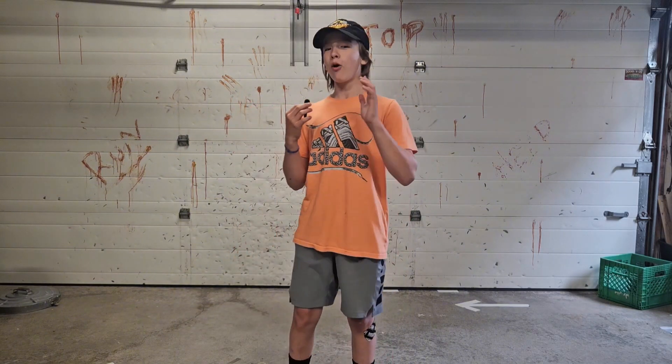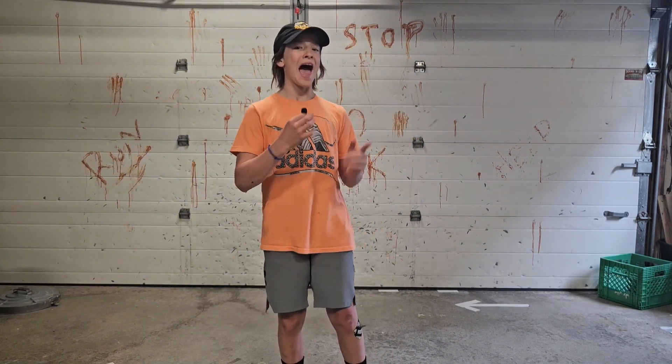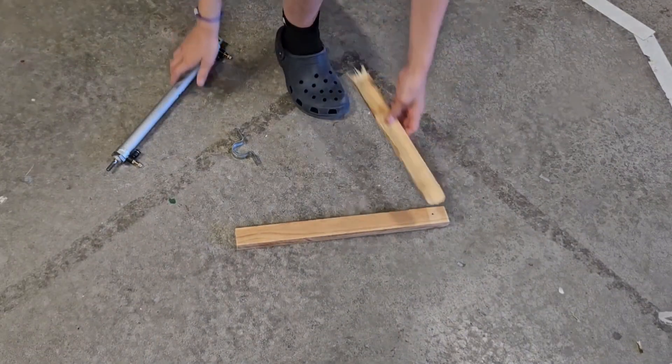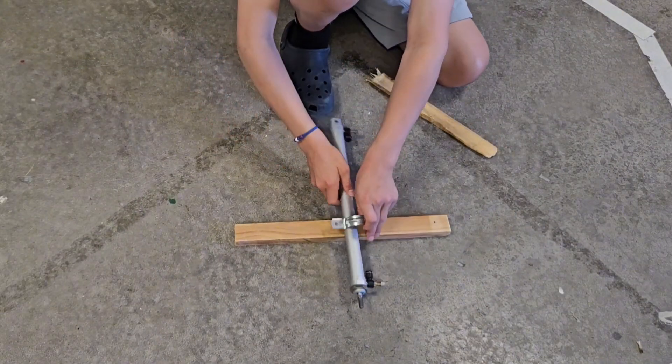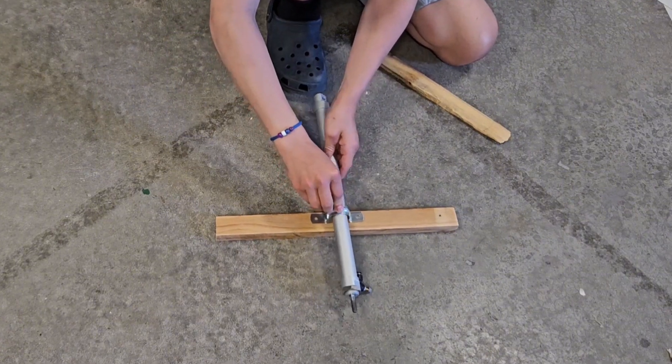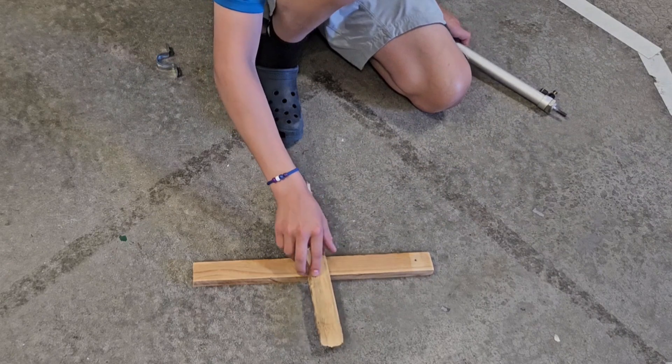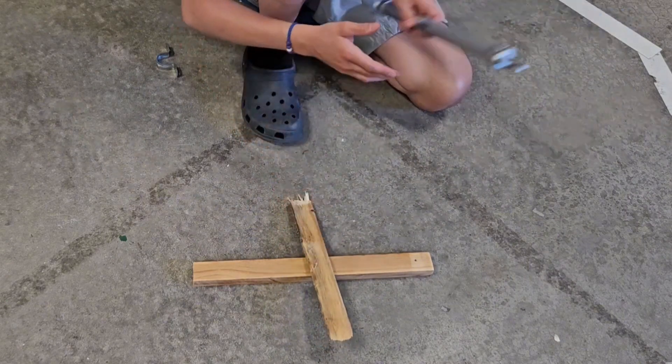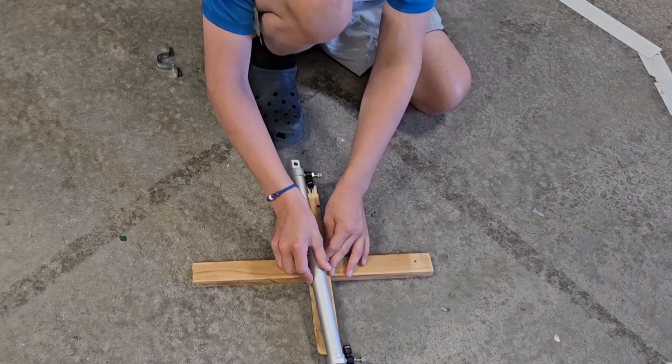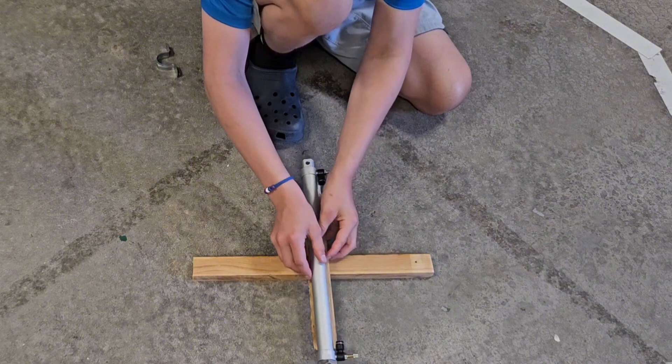So I actually realized that my clamp wasn't strong enough to hold on to here because it's very loose. So I'm actually going to take this other piece of scrap wood and it's going to act as a support for it so it doesn't move around as much. So let's screw it right in.